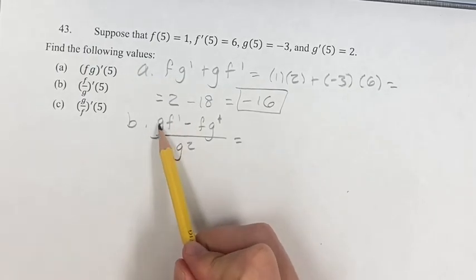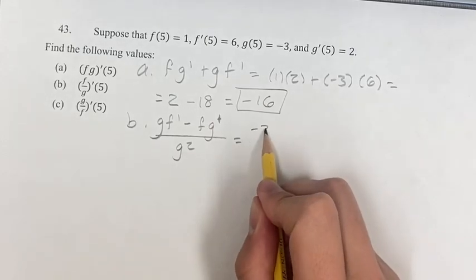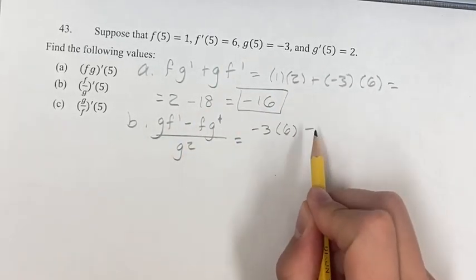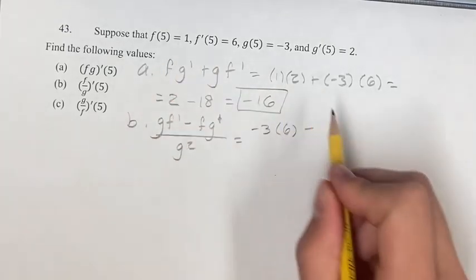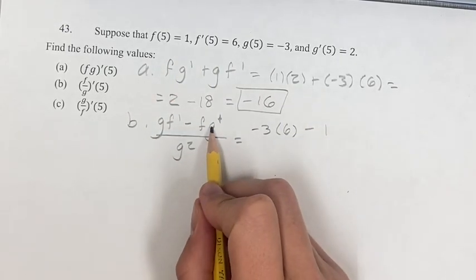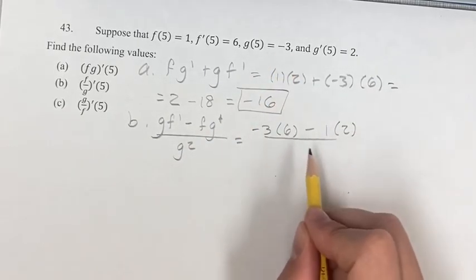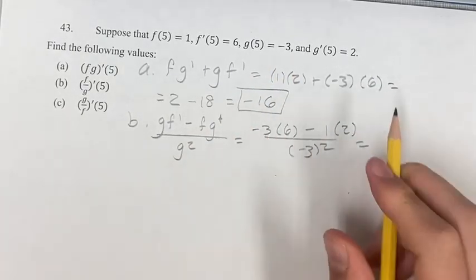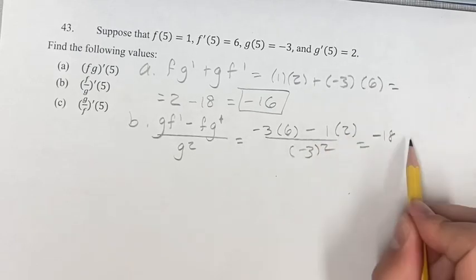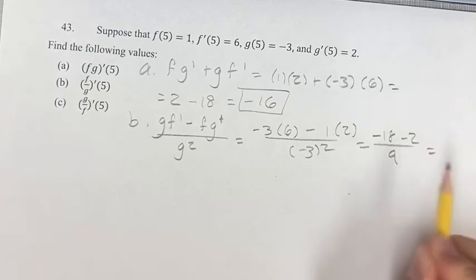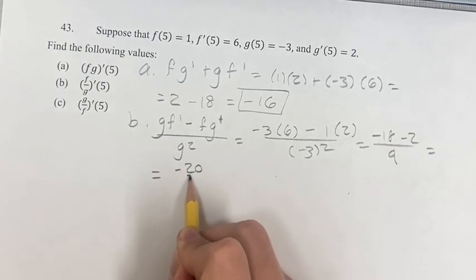The denominator is negative 3, the derivative of the numerator is 6, minus the numerator is 1, the derivative of the denominator is 2, and the denominator is negative 3, which is squared. This is negative 18 minus 2 over negative 3 squared is positive 9, so we get negative 20 over 9.